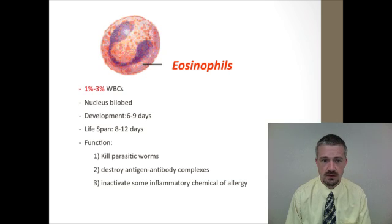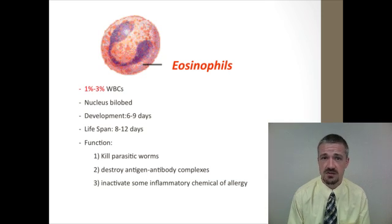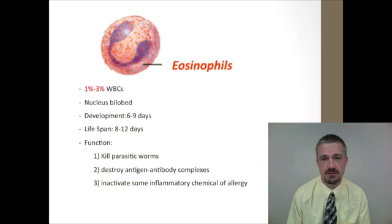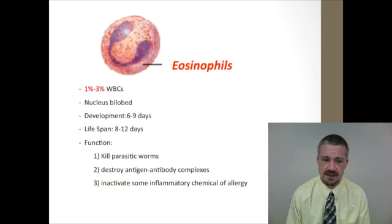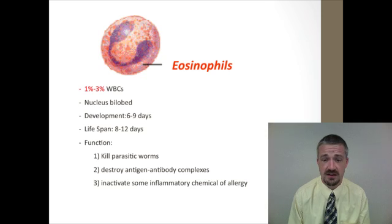Another granulocyte is the eosinophil, which gets its name from the H&E stain — hematoxylin and eosin — used on body tissues. Its cytoplasmic granules stain well with eosin, resulting in a nice pink color. They make up about 1% to 3% of white blood cells. The nucleus is a barbell shape — two lobes with a small connection in the middle. The main function is destruction of eukaryotic pathogens such as fungi and parasitic worms, and it also helps inactivate allergic responses.